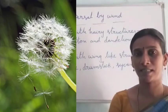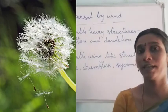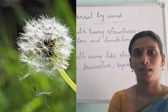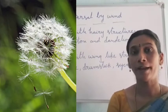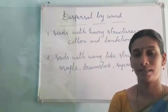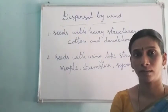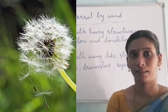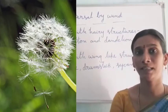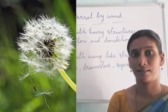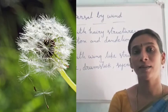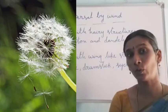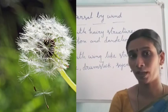First we will discuss seeds with hairy structures. Seeds such as cotton and dandelion have hairy structures which help them to float with the help of the air. Around the seed there are hairy structures. Because of these hairy structures, they can easily be blown away with the help of the air, and disperse into distant places where they can grow into a new plant.